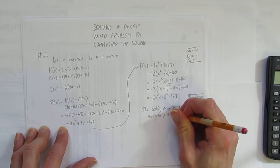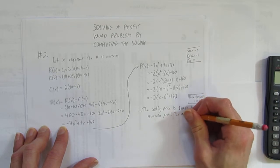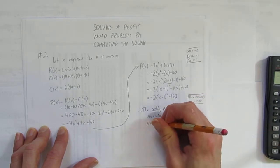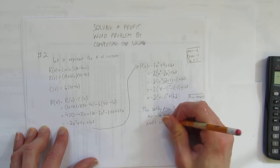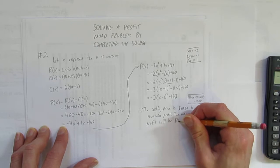And then the second part of the question read, what will that profit be? The maximum profit will be, and that's this vertex y, $162. And we've done it.